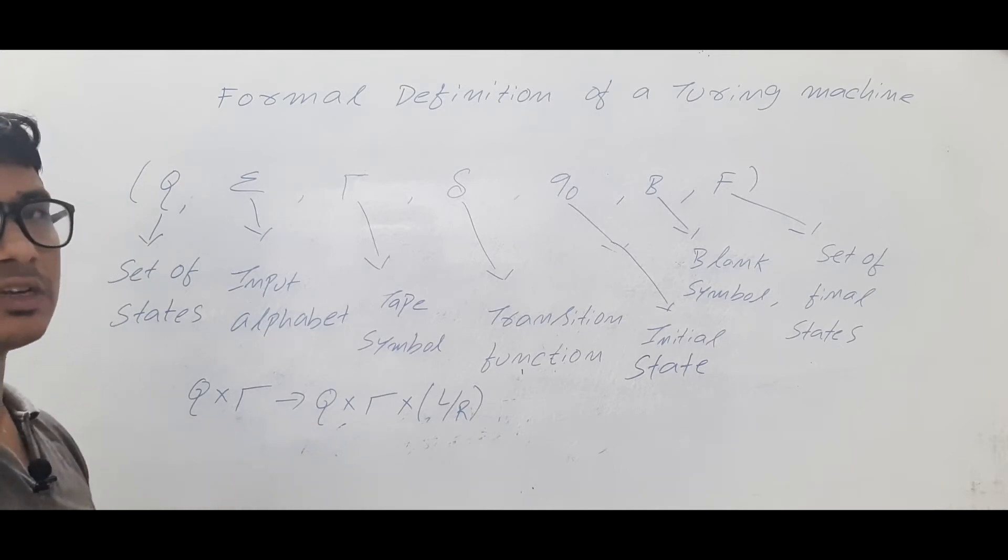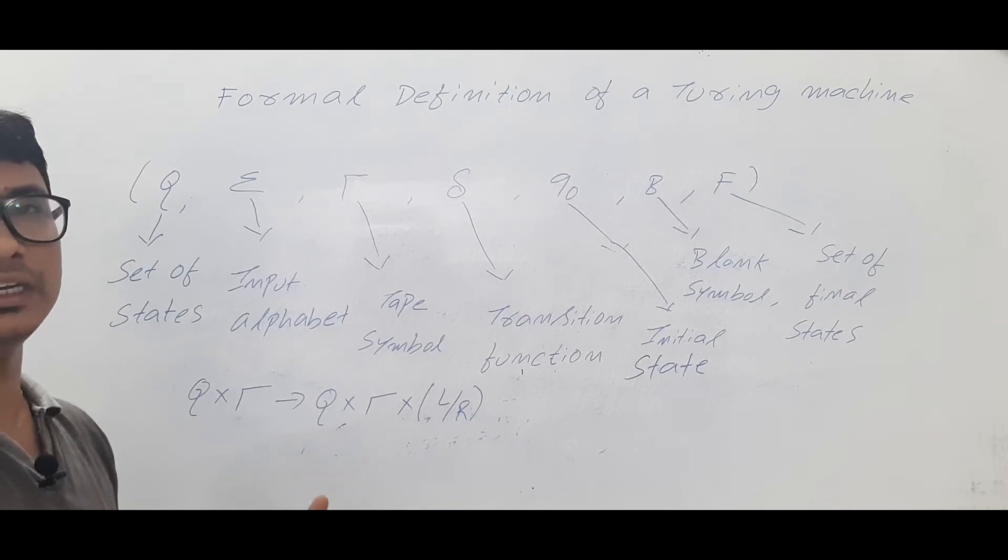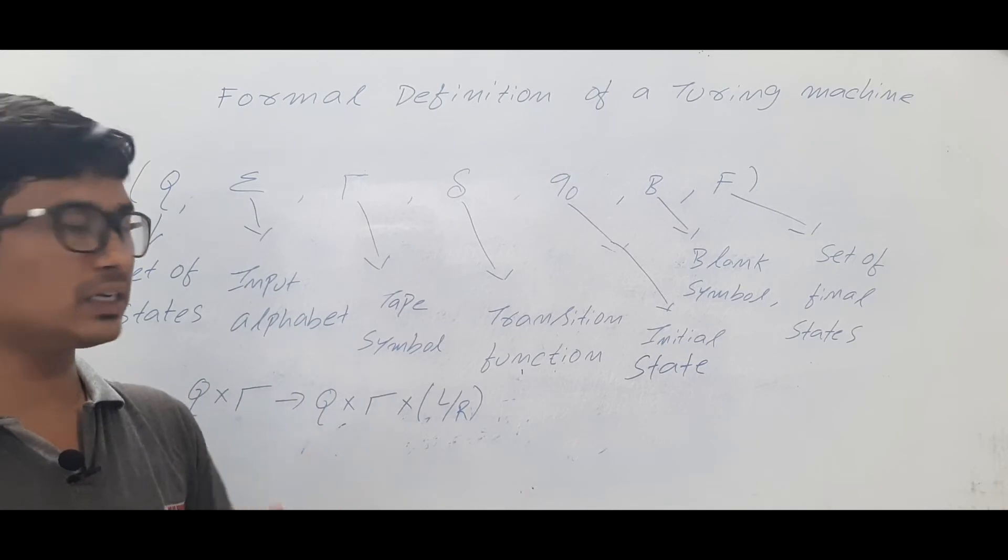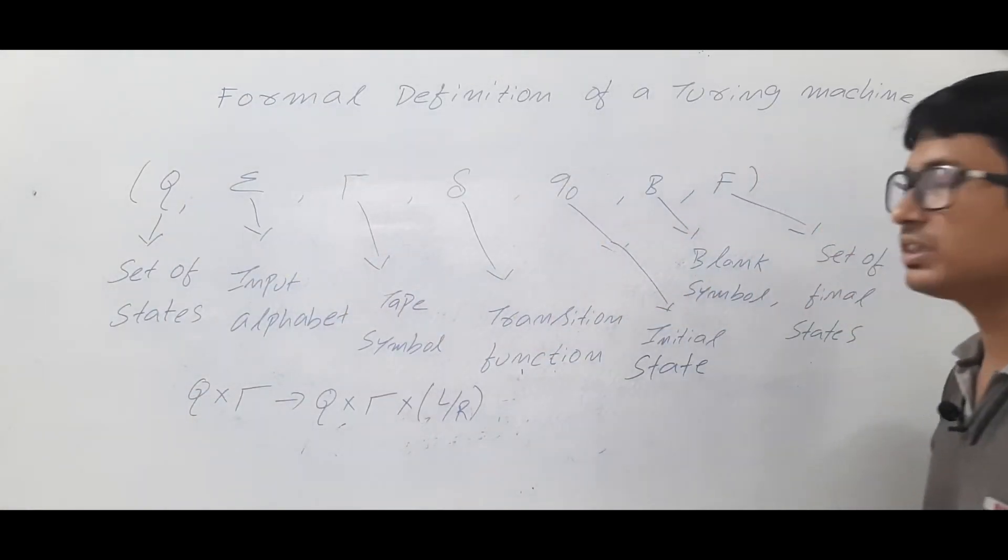Now we will discuss the transition function for a deterministic Turing machine - meaning that from a state, on looking at an alphabet, you will go to only one state. So now we will discuss the transition function with an example.